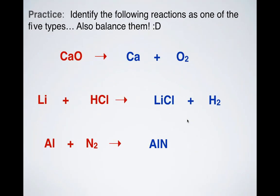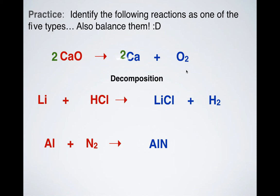Alright, let's see if we can balance these equations. First, let's identify the type of reaction. I've got CaO — that's calcium oxide — and I'm making calcium and oxygen. That would be a decomposition reaction. Now let's balance this. I have one calcium and one oxygen on the left, but one calcium and two oxygens on the right. So I put a 2 in front of CaO and a 2 in front of Ca. Now I have a balanced equation.